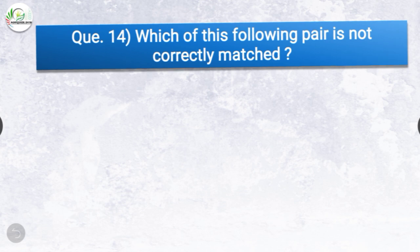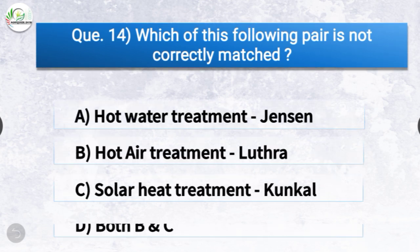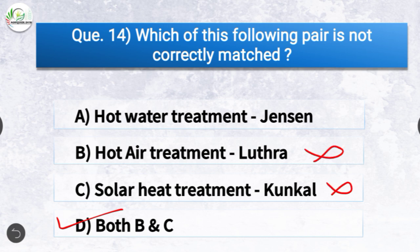Question number fourteen: Which of the following pairs is not correctly matched? The correct answer is option D, both B and C. Hot air treatment by Luthra and solar heat treatment by Kunkel are not correctly matched. The correctly matched pairs are: hot water treatment by Jensen, hot air treatment by Kunkel, and solar heat treatment by Luthra.